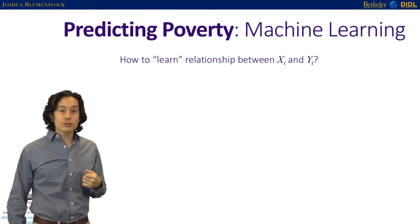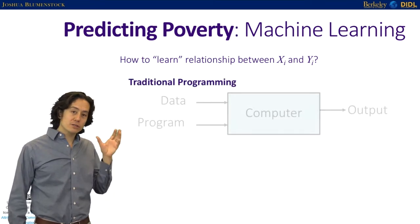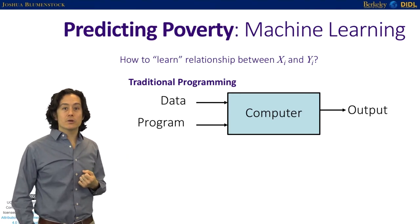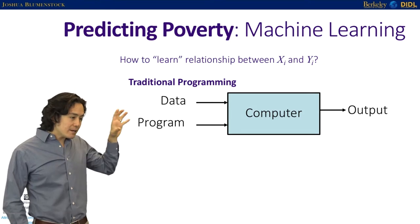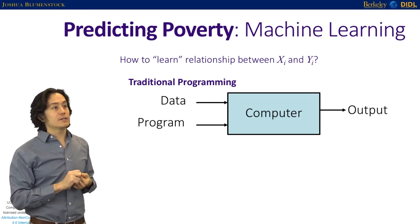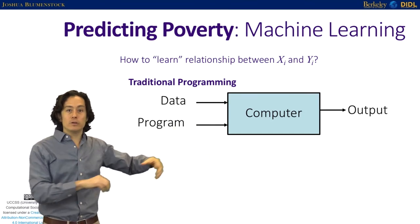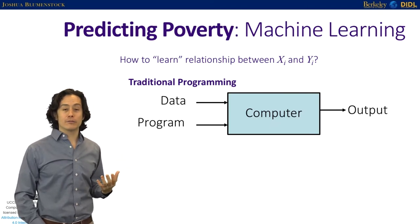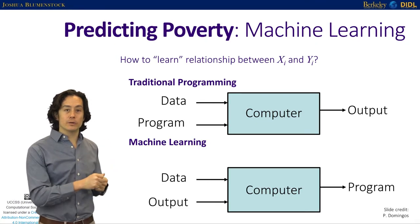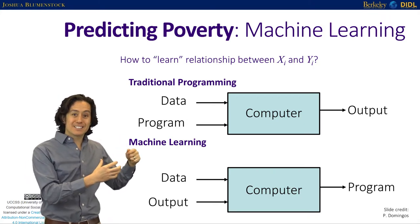How do we learn the relationship between inputs and outputs? Traditional programming takes data and a program and produces output. Machine learning flips this: you feed in the data and the output, and the computer writes the program for you. In our context, the data we feed in are the features — the X variables derived from call data — and the output we feed in are the Y variables, the things we want to predict. The computer produces a model, a functional mapping linking X's to Y's.